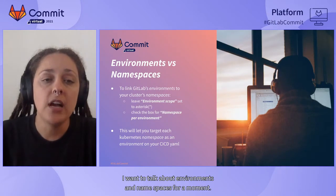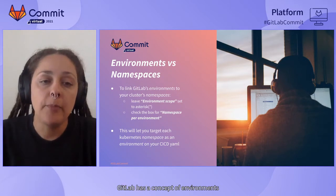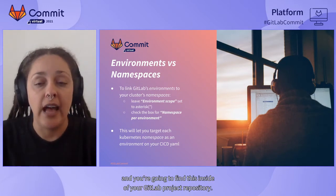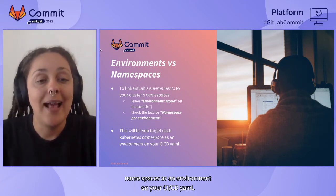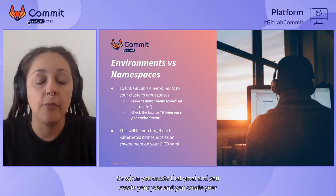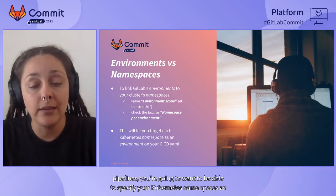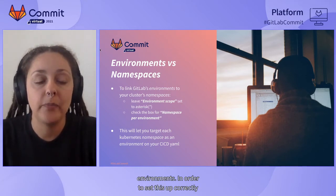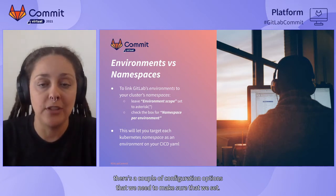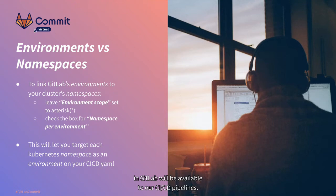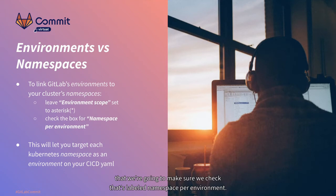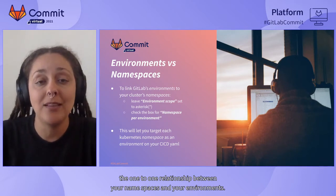Before I get into the first step, I want to talk about environments and namespaces for a moment. GitLab has a concept of environments inside your GitLab project repository, and you want to be able to target each one of your Kubernetes namespaces as an environment on your CI/CD YAML. There are a couple of configuration options to set: first, the environment scope option — leave this defaulted to asterisk so all environments are available to your CI/CD pipelines. Second, check the box labeled 'namespace per environment,' which creates a one-to-one relationship between your namespaces and your environments.